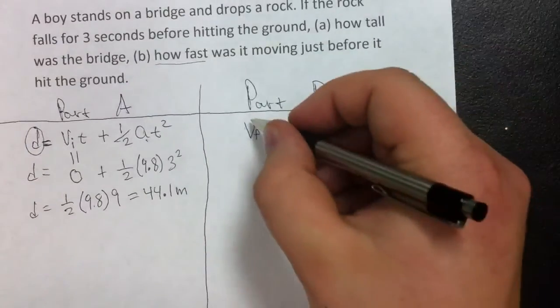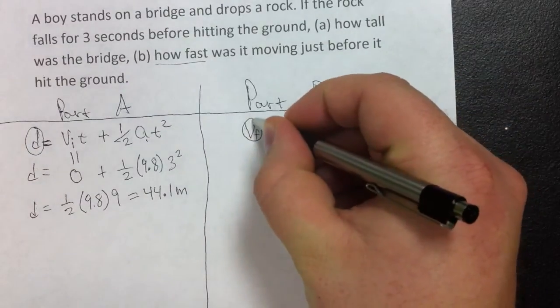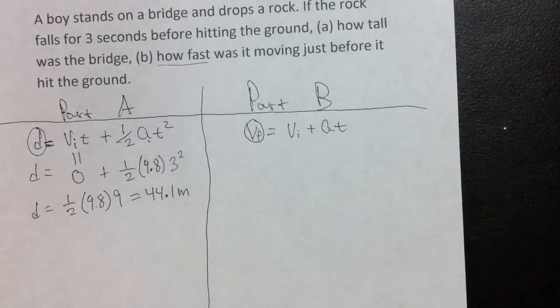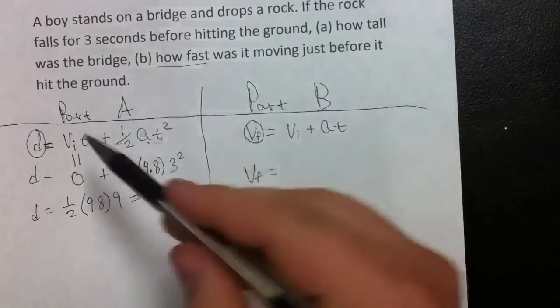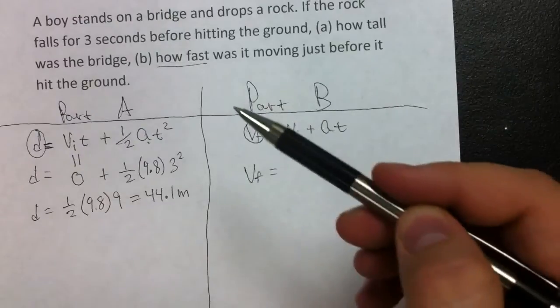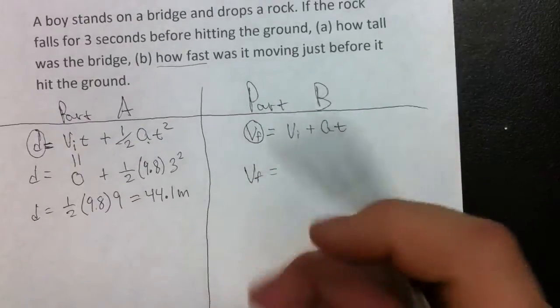It's asking for just before it hits the ground. So, the variable that we're going to be looking for is the final velocity. Our velocity final is equal to—remember I said that the initial velocity, because he's not throwing it down, he's just dropping it, is zero.